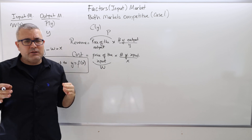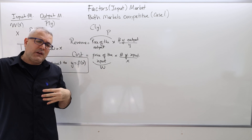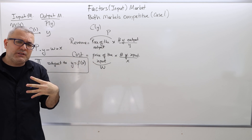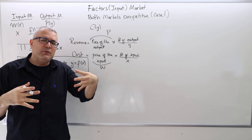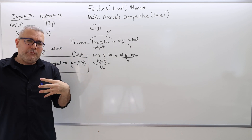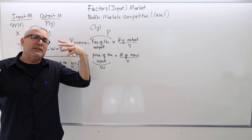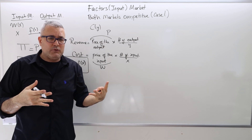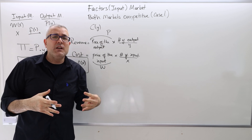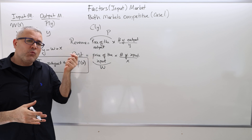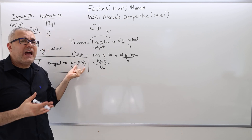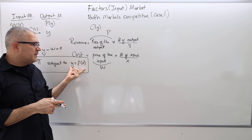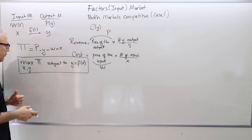If Y is not equal to F(X), it means you're choosing some X and some Y that are not matched. You're using a bunch of inputs but the number of outputs you choose doesn't match. So you probably won't be able to produce and sell those products. The Y you're willing to sell must equal F(X), so the amount of X needed to produce Y is given by this production function. This constraint is very important.